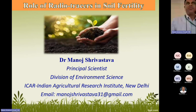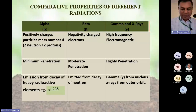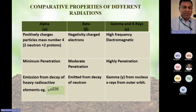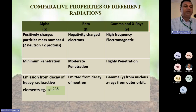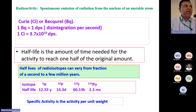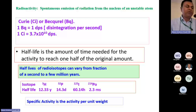Today's lecture is on the role of radio tracers in soil fertility. There is a difference between alpha, beta, and gamma in terms of their charged particles and their penetration power. Gamma rays are high-frequency electromagnetic radiation, whereas alpha and beta are particles — positively and negatively charged. Radioactivity is the spontaneous emission of radiation in the form of alpha, beta, and gamma from the nucleus of an unstable atom. The current SI unit is Becquerel; the older, bigger unit was the Curie. One Becquerel equals one DPS — disintegration per second.